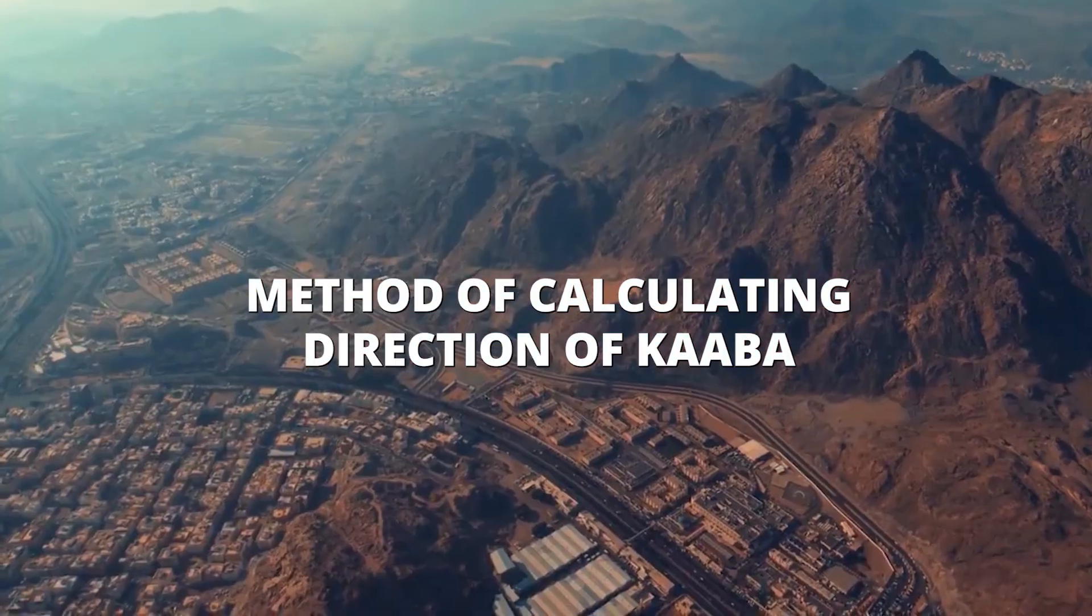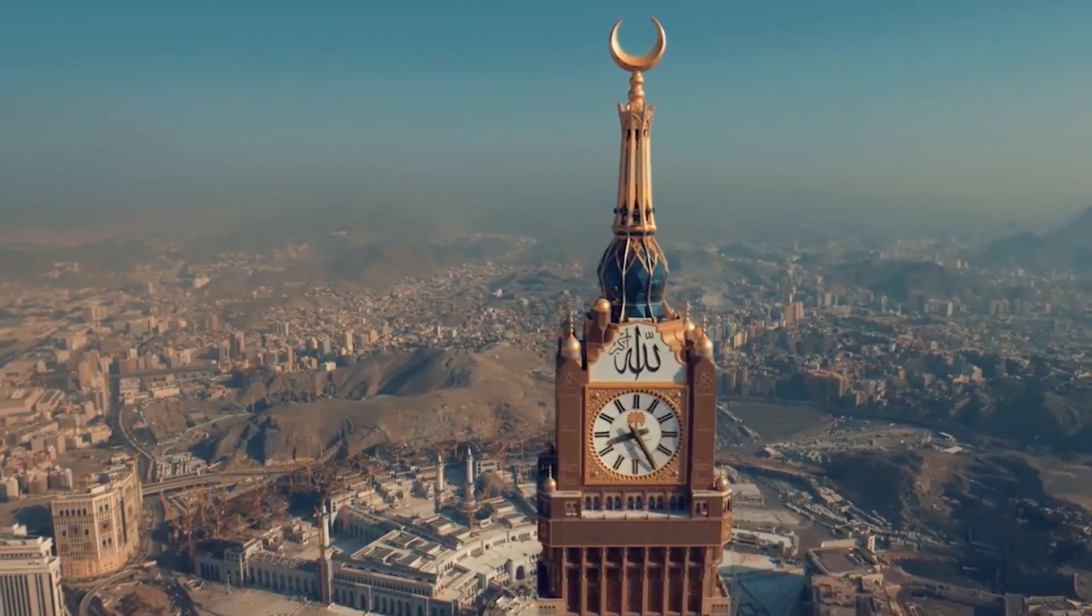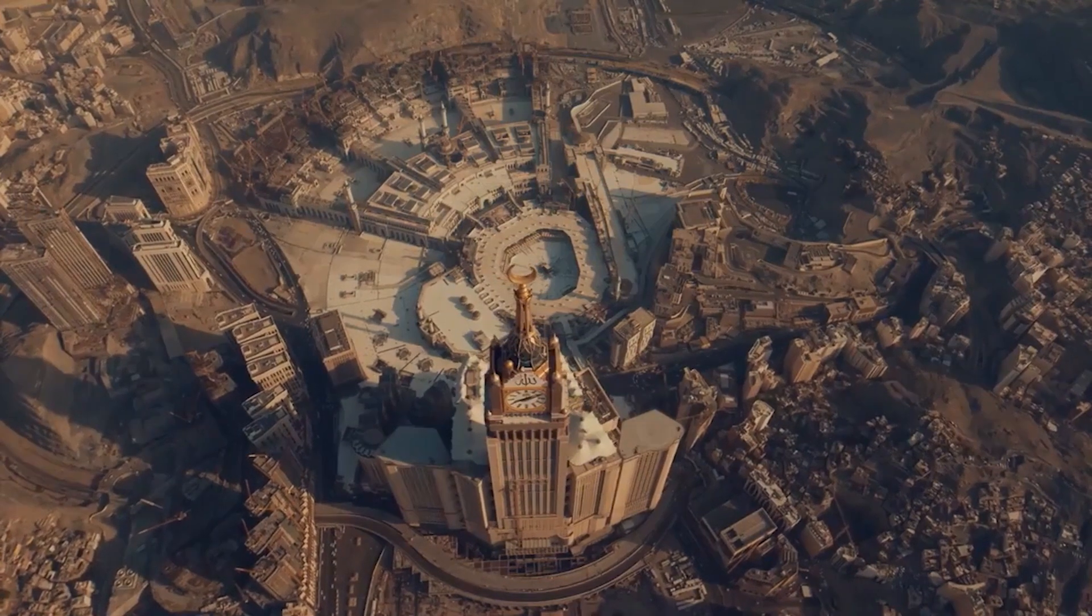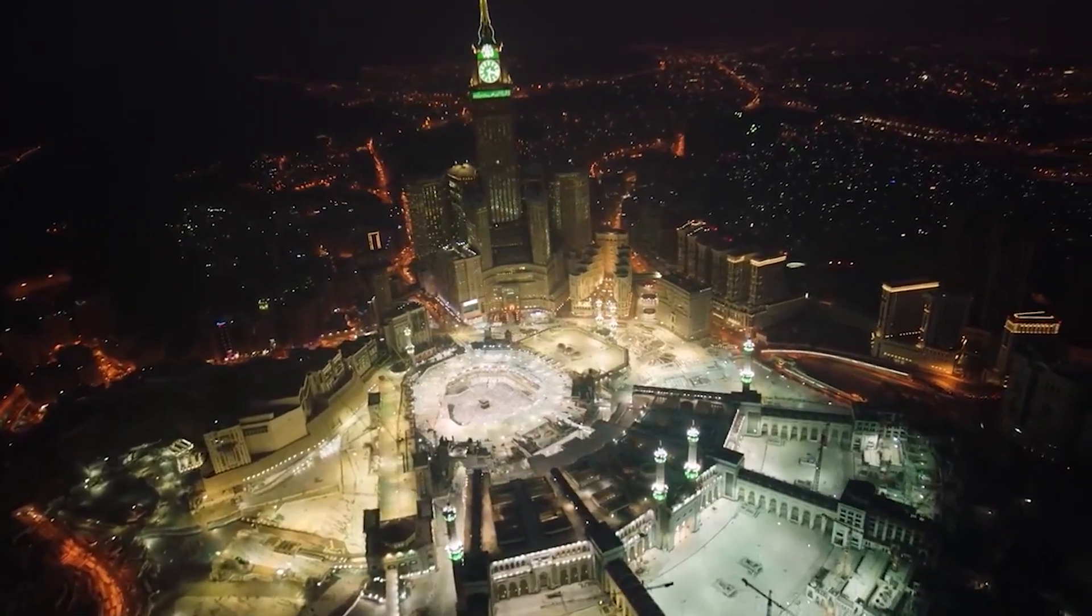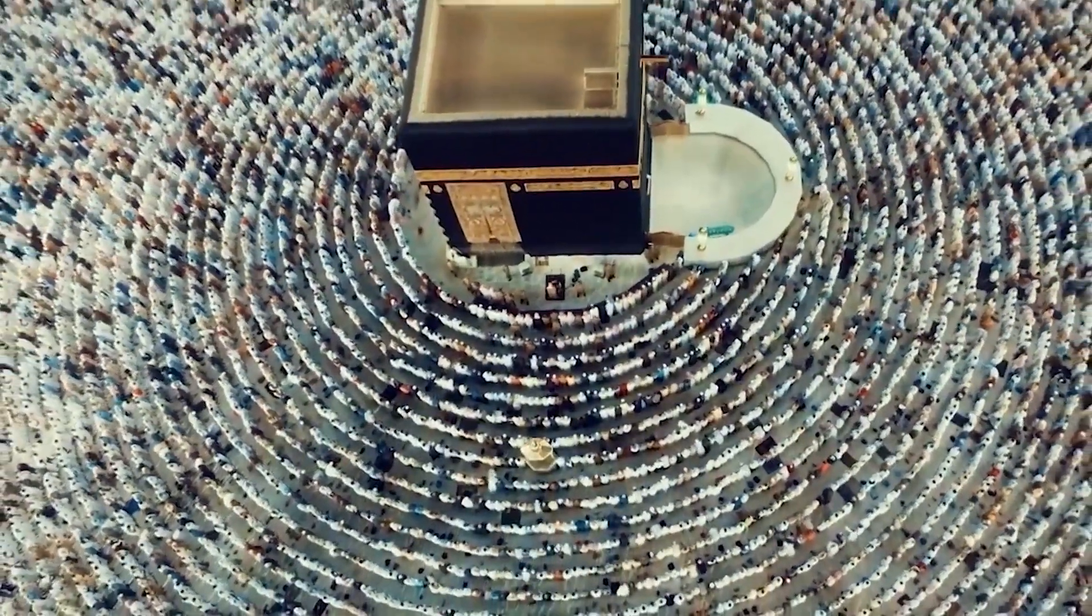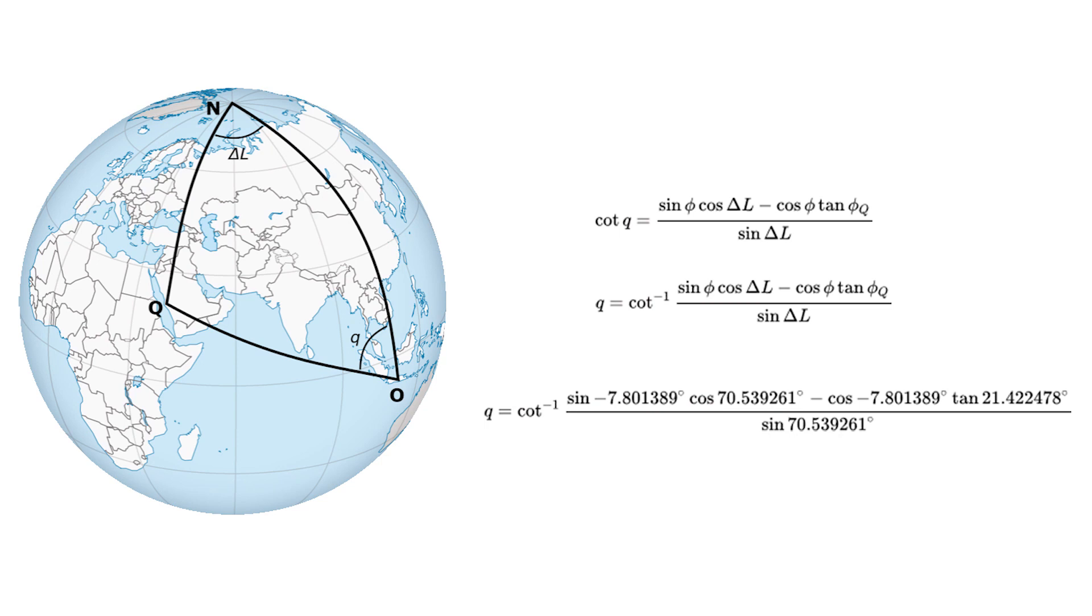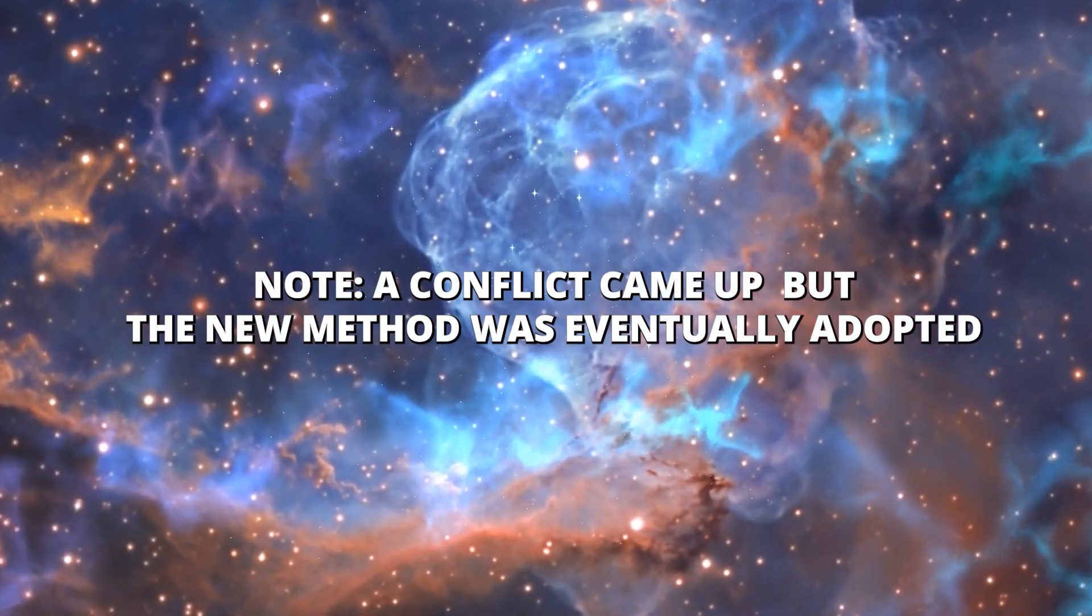Method of calculating the direction of Kaaba. Muslims pray facing the Kaaba in Mecca as directed in the Quran. This is a magnificent concept of one direction, one people, one God, as all are equal in front of God. Muslim astronomers from the 9th century onwards dealt with the determination of the Qibla. They treated it as a problem of mathematical geography, and they produced highly sophisticated trigonometric and geometric solutions. Although, when new formulas had been determined by the Muslim astronomers, there was some conflict to adopt the new methods. To this day, a few old mosques around the world exist with the wrong Qibla directions. Note, a conflict came up, but the new method was eventually adopted.